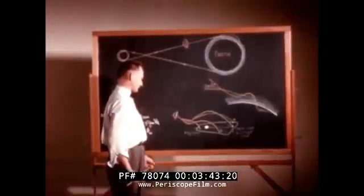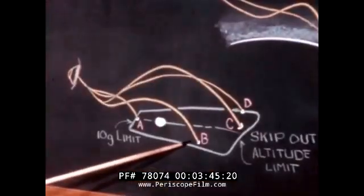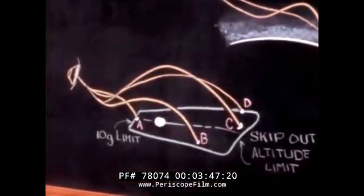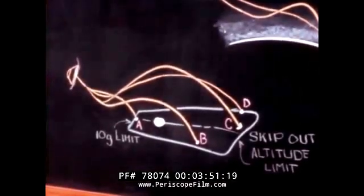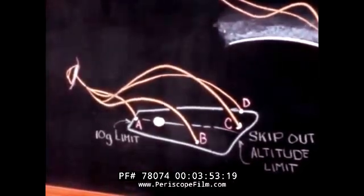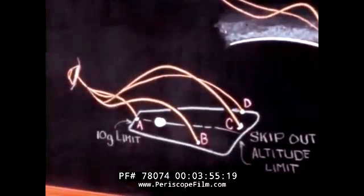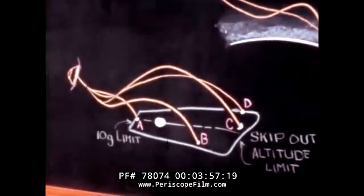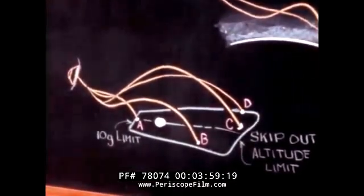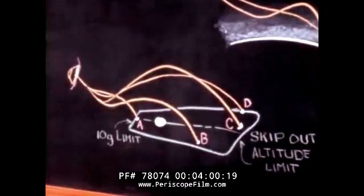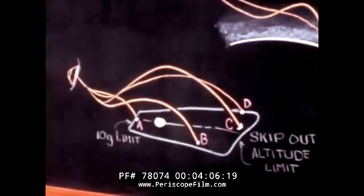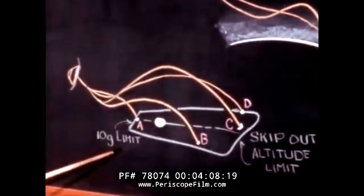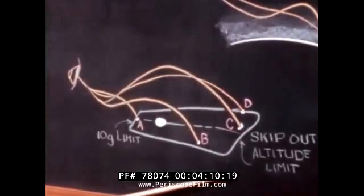For this simulation, a target has been selected to demonstrate that a particular re-entry guidance technique may be used to guide an Apollo vehicle along a safe trajectory to the selected landing site. By safe is implied that the vehicle shall not be subjected to excessive deceleration or heating and shall not skip above a prescribed altitude. The limits used here are 10G and 500,000 feet in altitude.